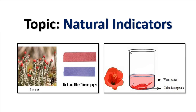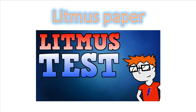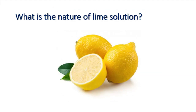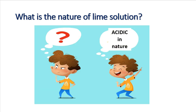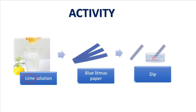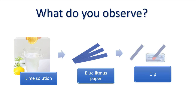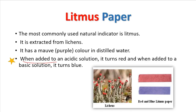First, let us take litmus paper — the most commonly used natural indicator, which you will also find at your chemistry lab. To understand how litmus paper works, let us take an unknown substance: lime solution. We will take lime solution and a blue litmus paper and dip the litmus paper into it. You can observe that the blue litmus paper turns red when dipped into lime solution.